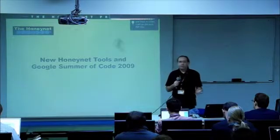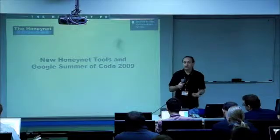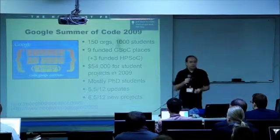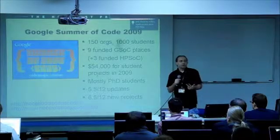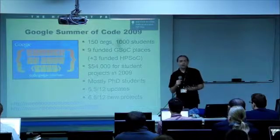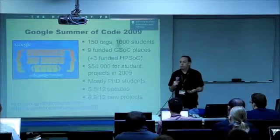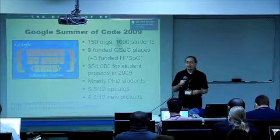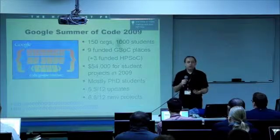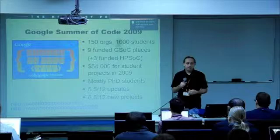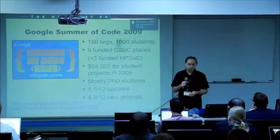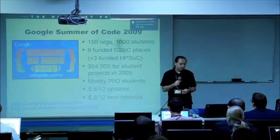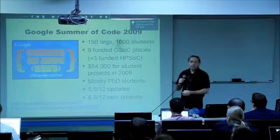I'm going to talk about new technology — what we've been doing in the last two years, particularly Google Summer of Code and some new initiatives you might not have heard of. We started in Google Summer of Code in 2009. This is a three-month project where students are funded by Google for $4,500 to work on software development projects. There were 150 organizations involved; we were one of them, and we had nine funded student projects. We also paid for three more ourselves using our own budget, which we called the Honeynet Summer of Code.